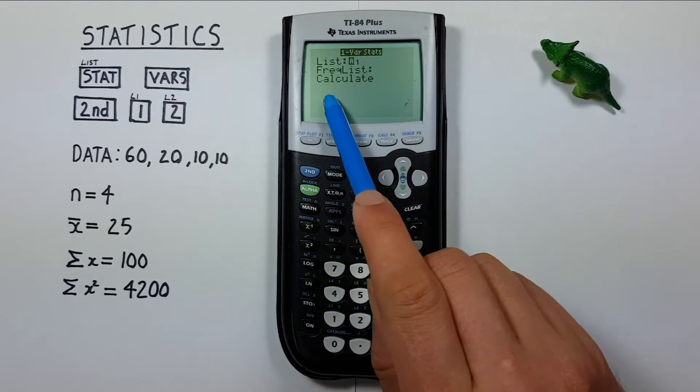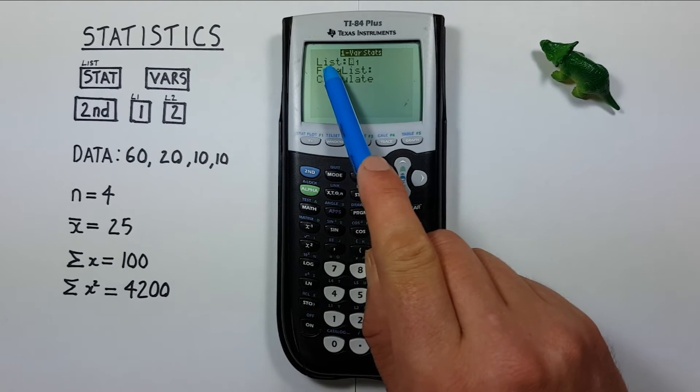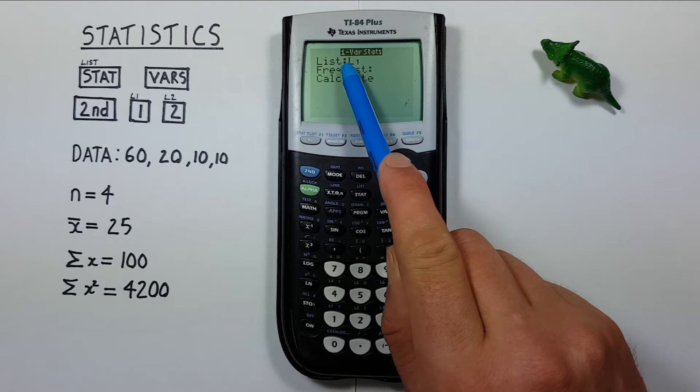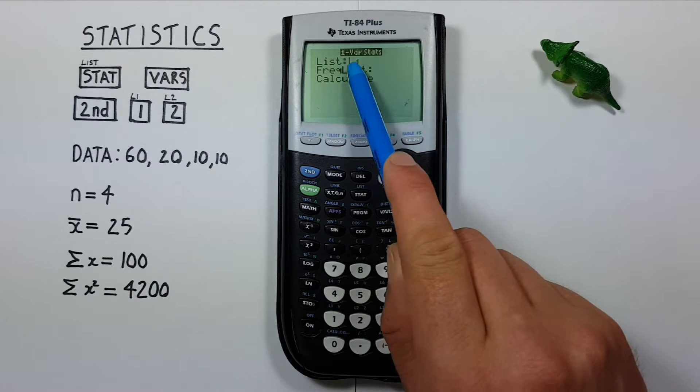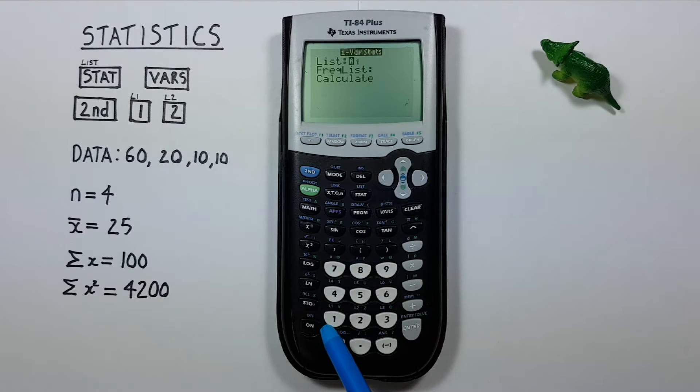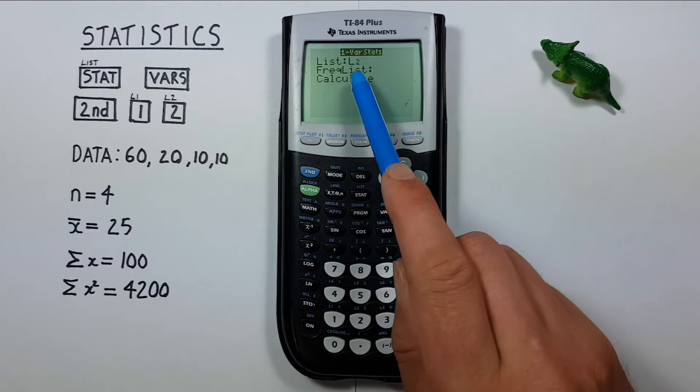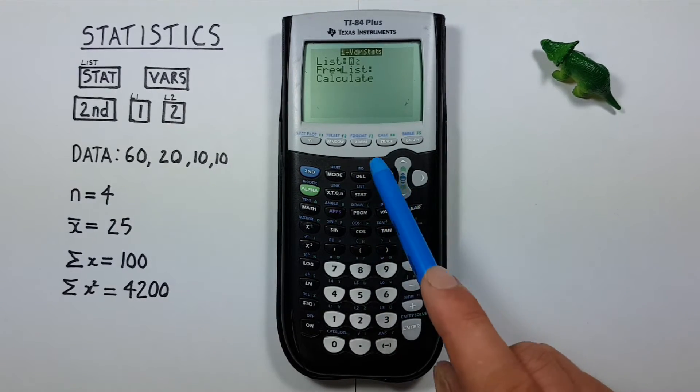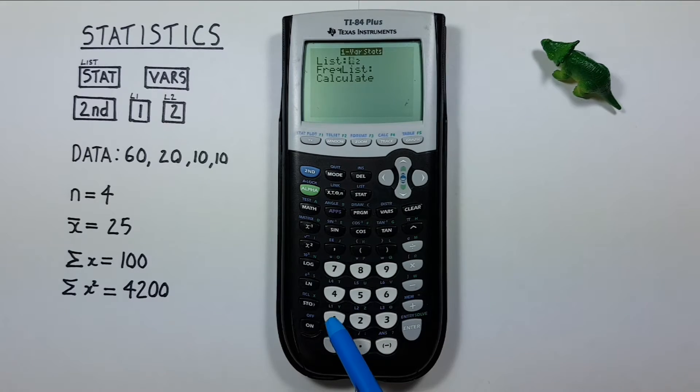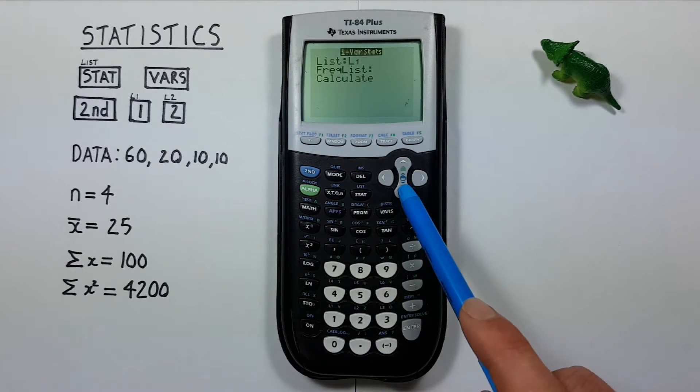It'll bring us to this. It's asking which list of data do we want to use. Well we entered all our data into list one, so we want L1. You can see it's already in there. If not you can enter it by pressing the second function and then the one key. You can see if I press second function two it puts list two in there. If I press second function one it puts L1 in there. So that's good.